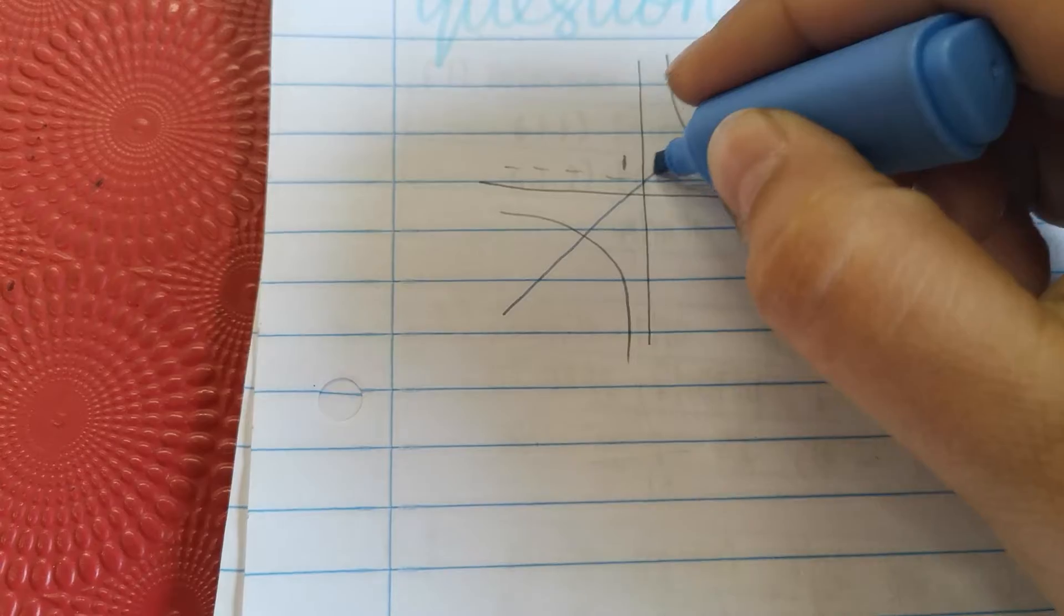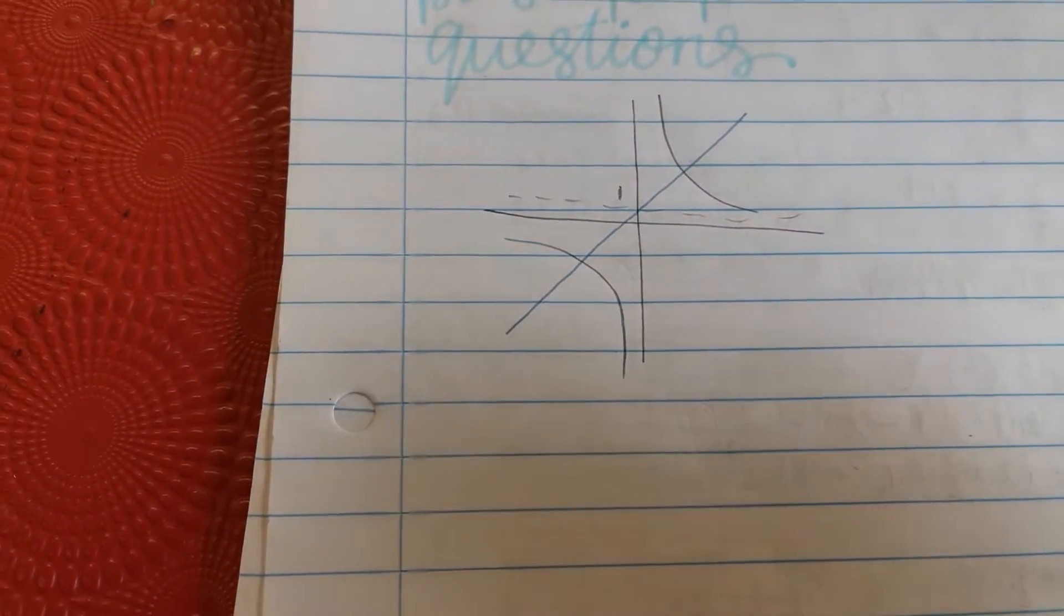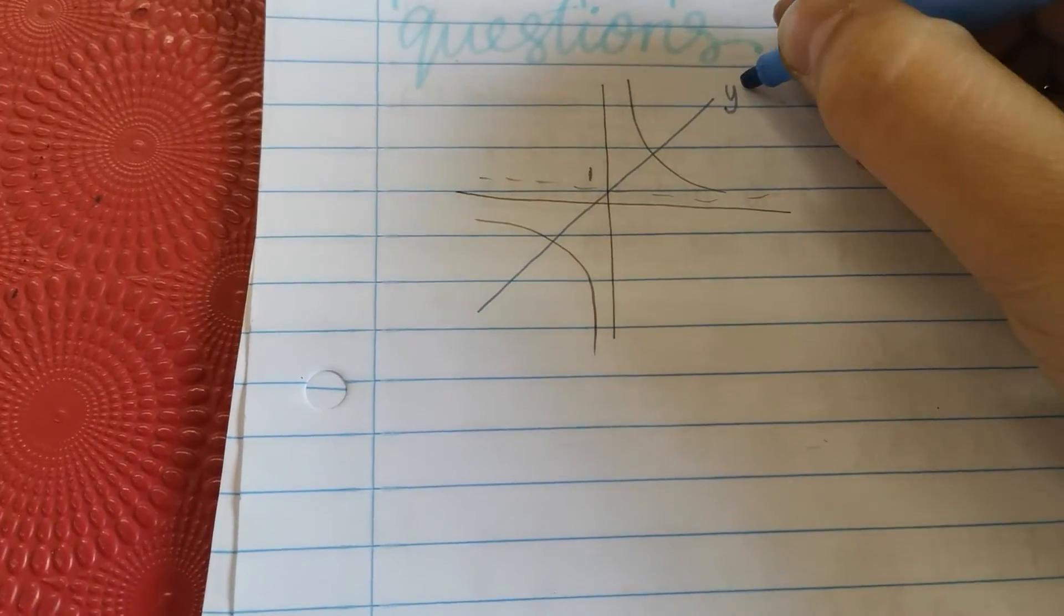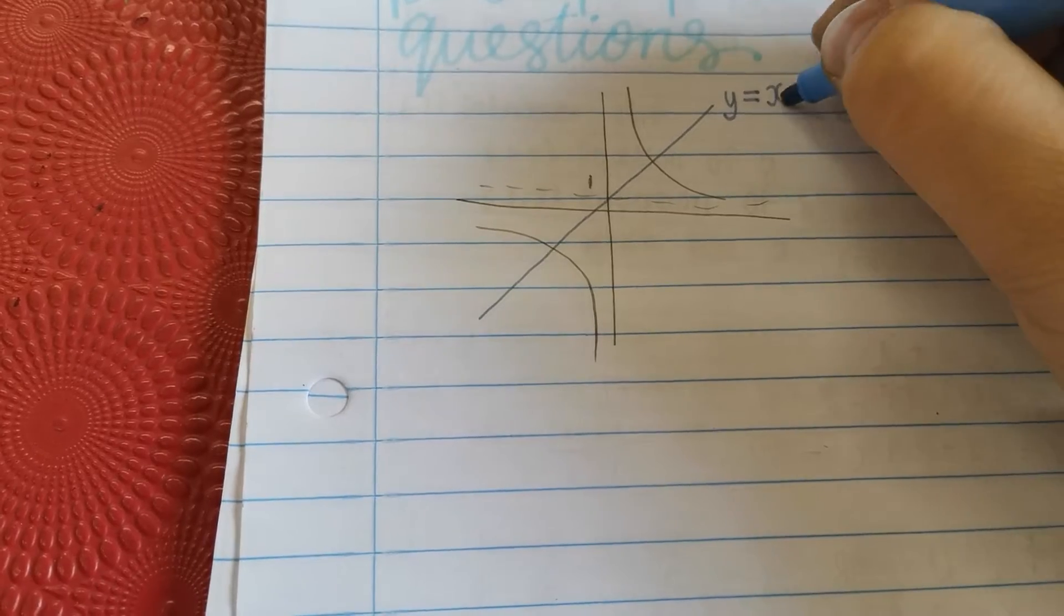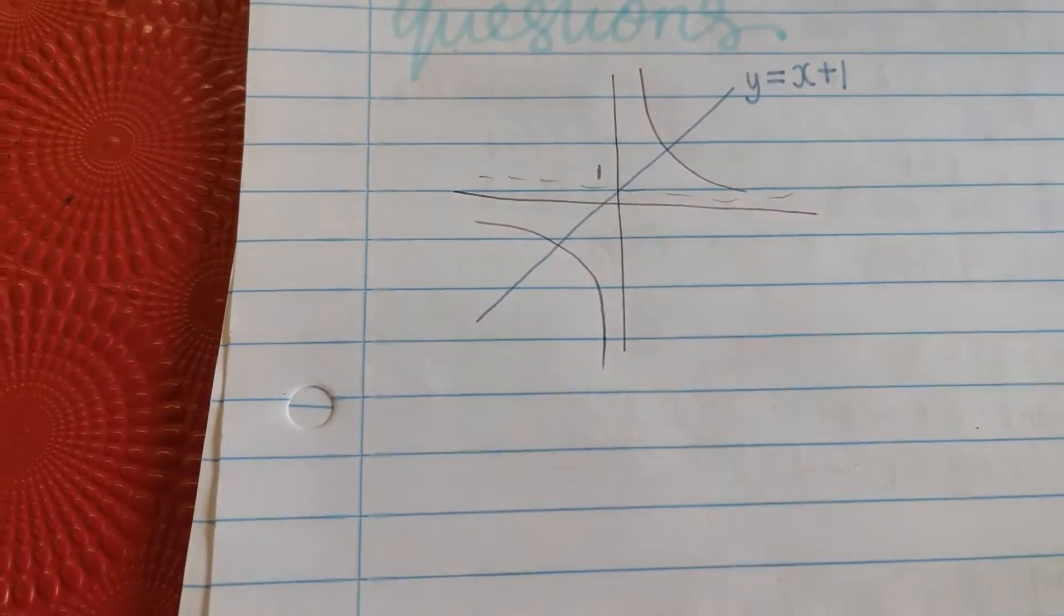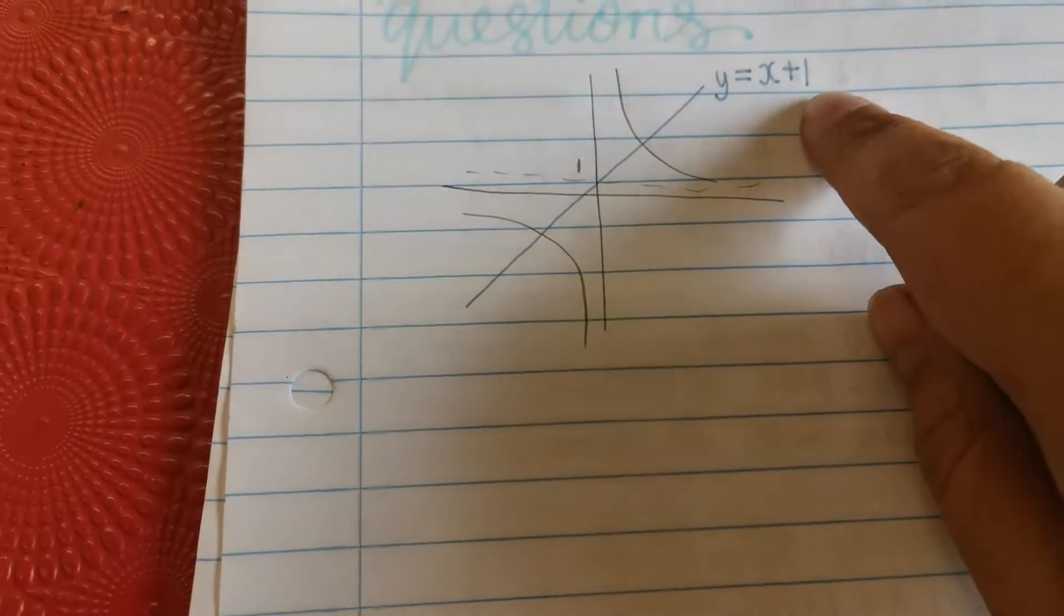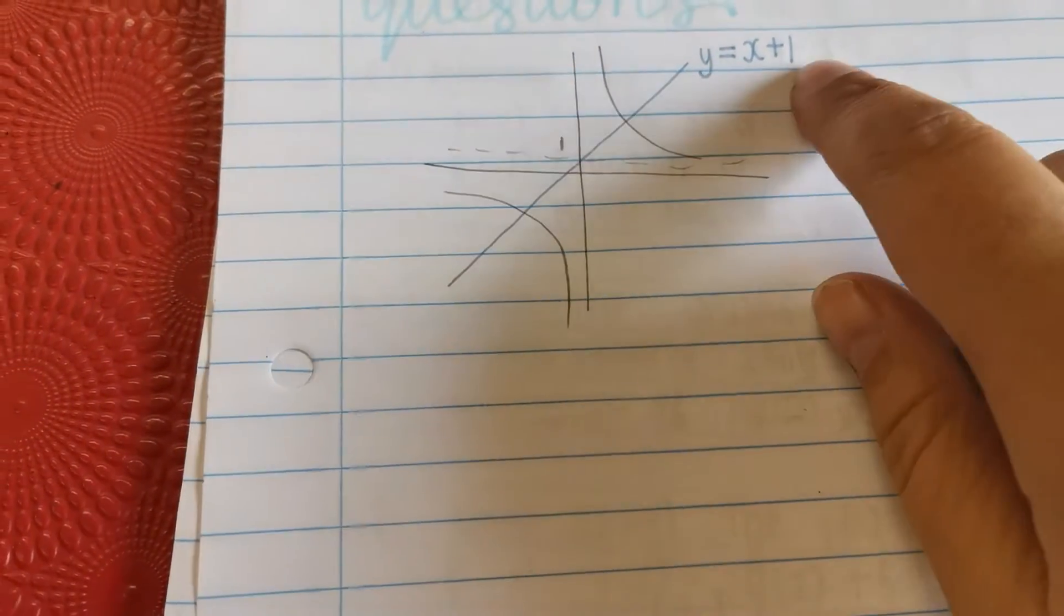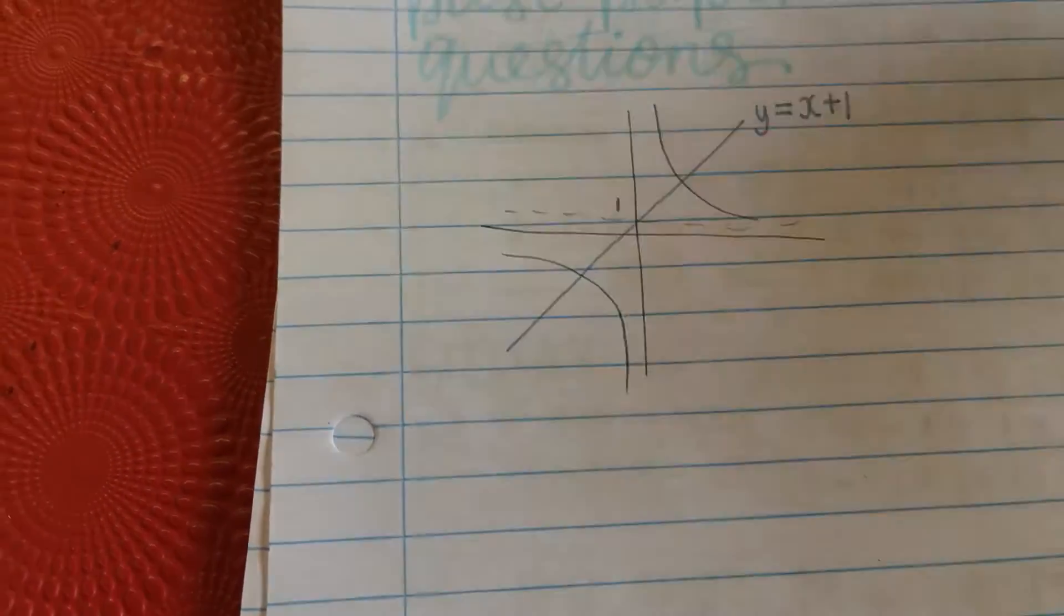And it's going to be y is equal to x plus 1. Where am I getting this plus 1 from? It's this value over here. If that was a 7, that would have been a 7. If that was an 11, that would have been an 11. That's the one gradient. And the negative one is going in this direction over here. And for the negative one, you just write y is equal to negative x plus 1.